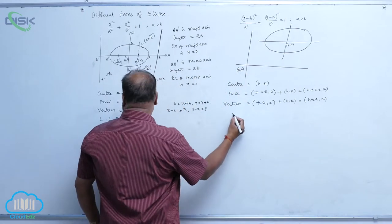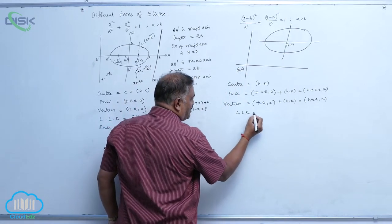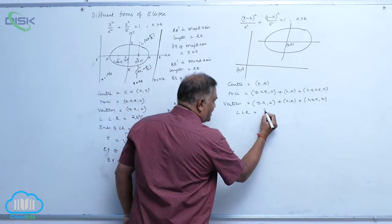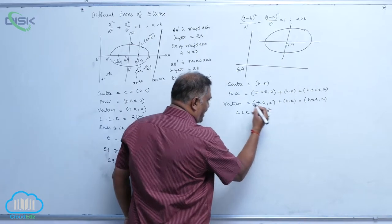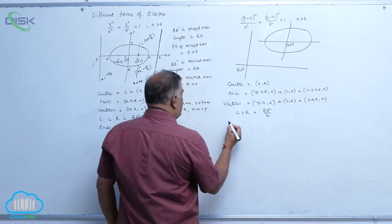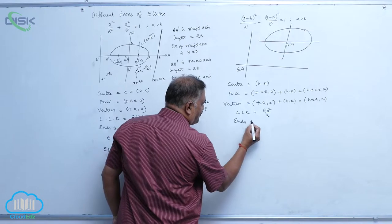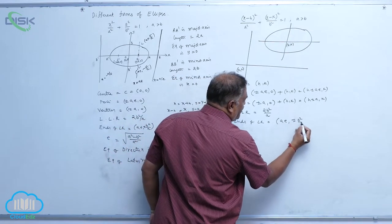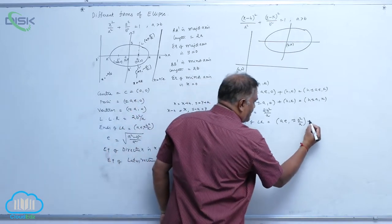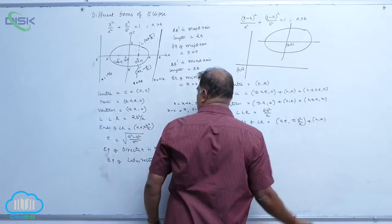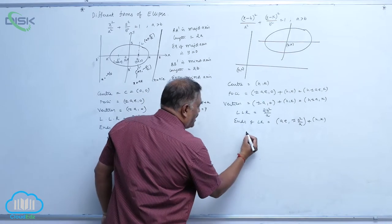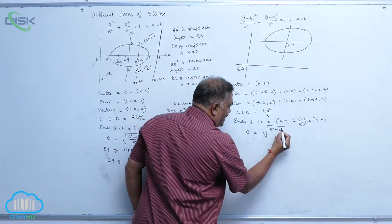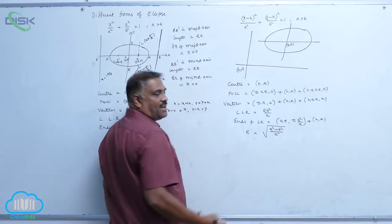The length of the latus rectum does not change — it remains 2b²/a, since length is independent of the origin. The eccentricity also remains e = √((a² − b²)/a²). The ends of the latus rectum are (h + ae, k ± b²/a).